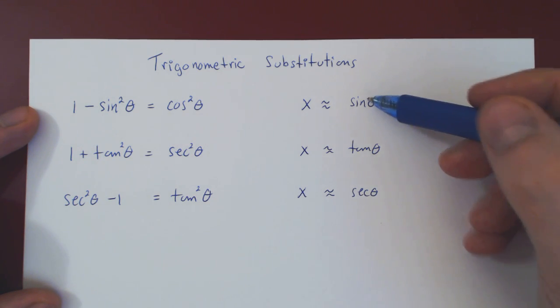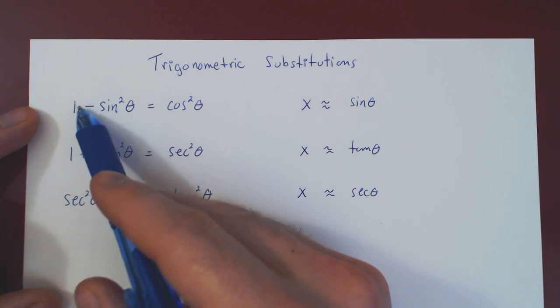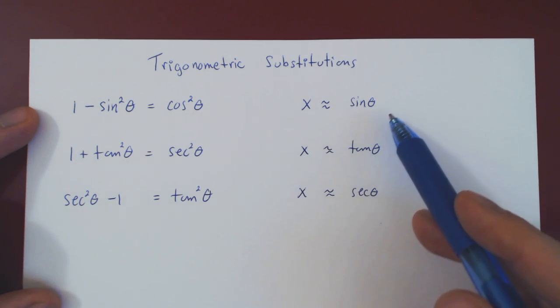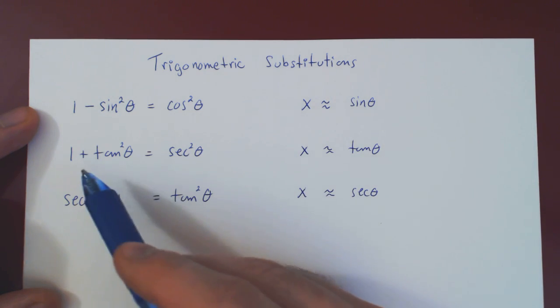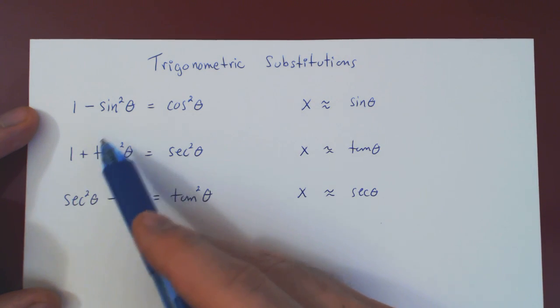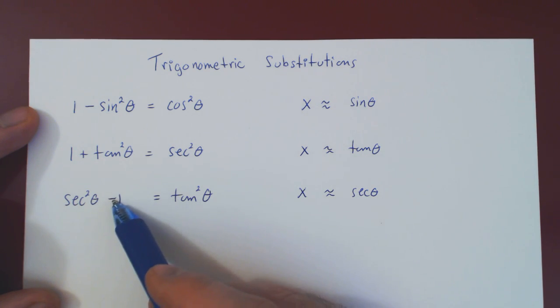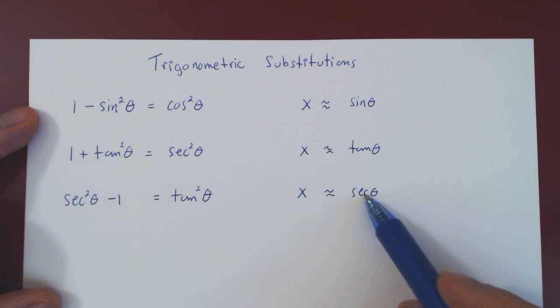And of course, the idea is to think of, here you have a constant minus something squared, in which case you want to use the sine function. If you have a constant plus something squared, you want to use the tangent function. And if you have something squared minus a constant, you want to use the secant function.